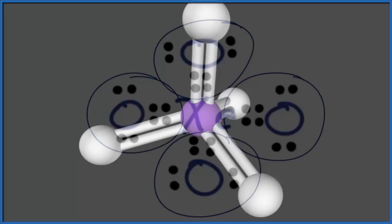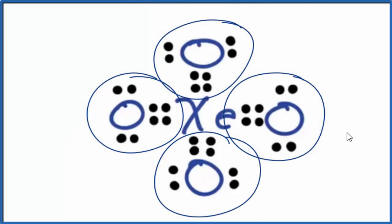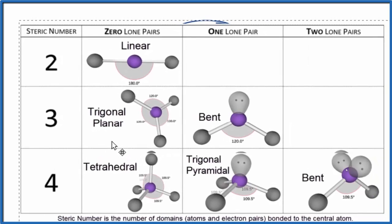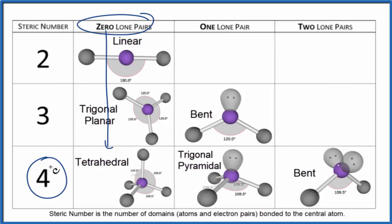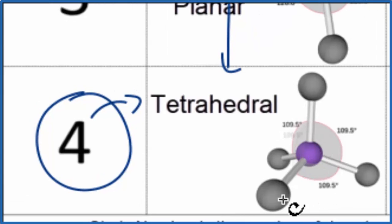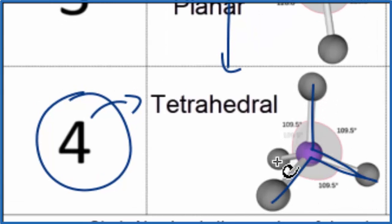Going back to our Lewis structure — if we weren't able to visualize that molecular geometry, we could count the number of things attached to the xenon atom. We have one, two, three, four atoms, so four things. The steric number is four. With a steric number of four and zero lone pairs, that gives us our tetrahedral molecular geometry. The bond angles here should be 109.5 degrees.